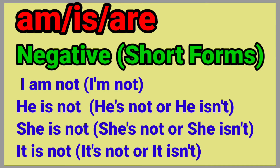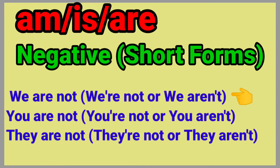AM, IS, ARE — negative short forms. The short form of I am not is I'm not. For he is not, you can say he's not or he isn't. With she is not, you can say she's not or she isn't. For it is not, you may say it's not or it isn't. The short forms of we are not could be we're not or we aren't. If you use you are not, you can say you're not or you aren't. And finally, they are not can be they're not or they aren't.